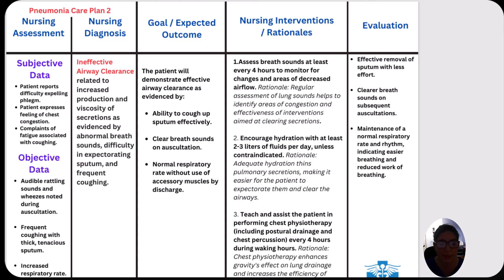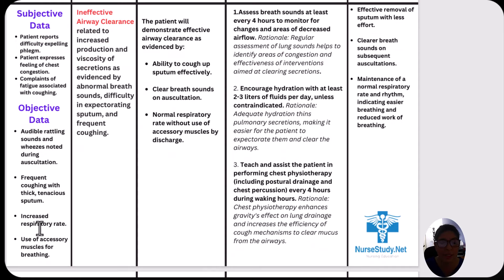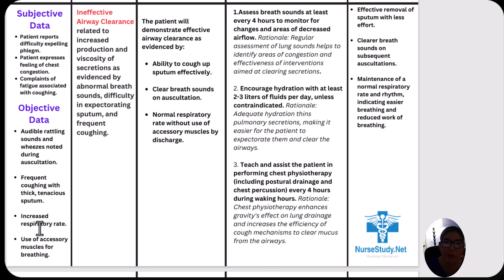The objective data is what you see: audible rattling sounds or wheezes noted on auscultation when listening with your stethoscope, frequent coughing with thick tenacious sputum, increased respiratory rate, and use of accessory muscles for breathing. Remember that tenacious sputum can be green or yellow — green is usually more indicative of pneumonia.